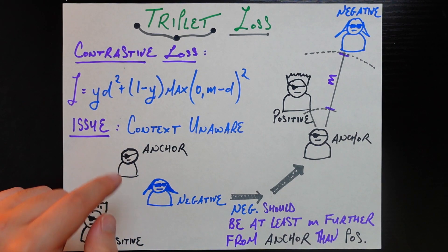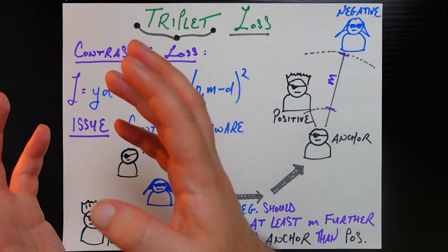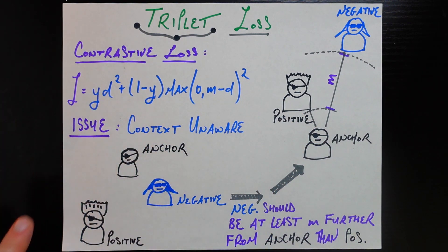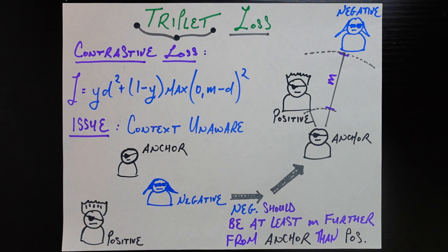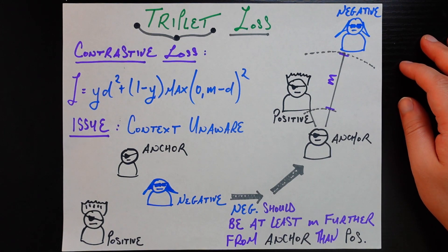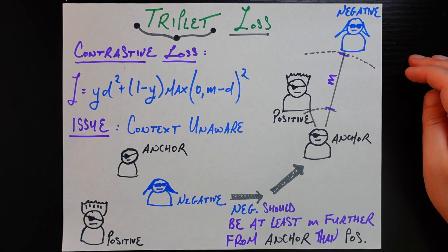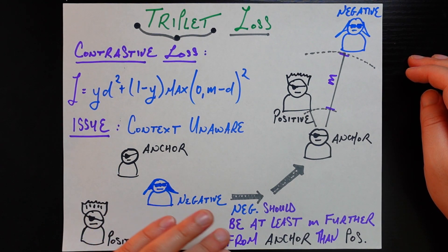The first is called the anchor — think of it as the ego or the main point we're focusing on; put yourself in the shoes of the anchor training example. The other two are relative to the anchor. One is called the positive, which is an example of the same class as the anchor — in our example, a picture of the same person, even if they've changed their hairstyle. The negative is explicitly a picture of a person from a different class — a different person altogether.